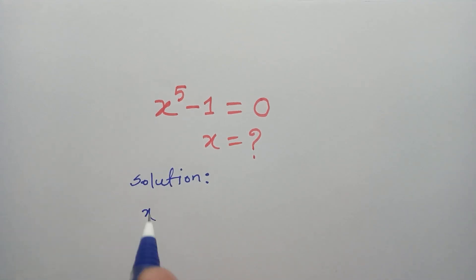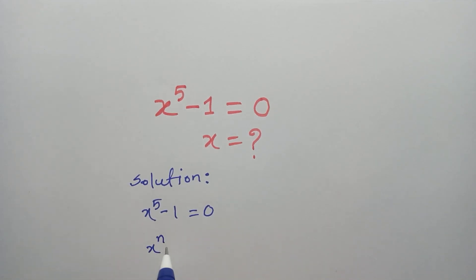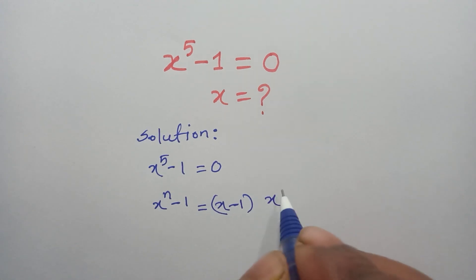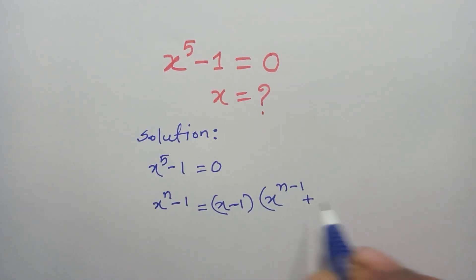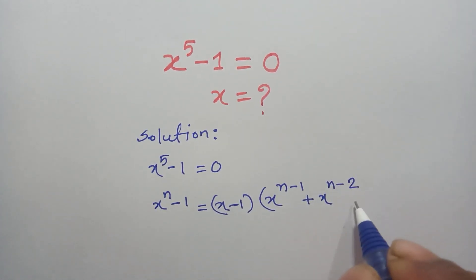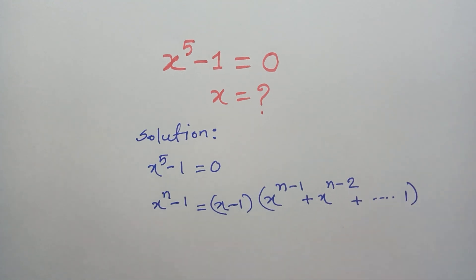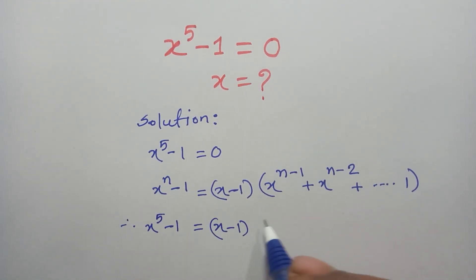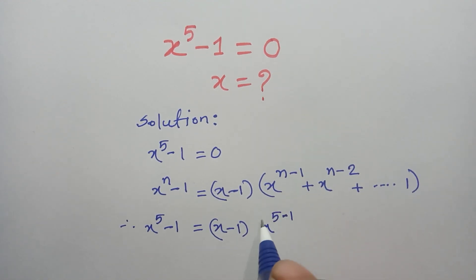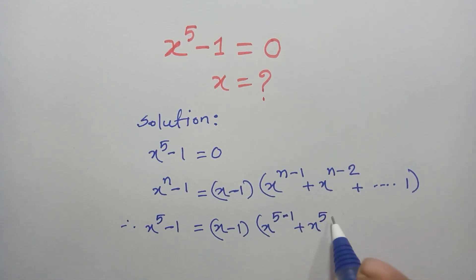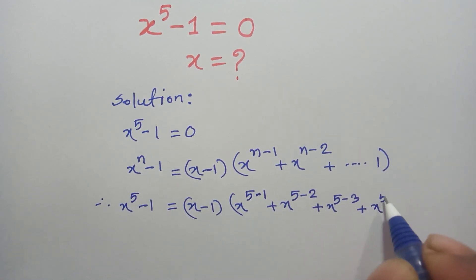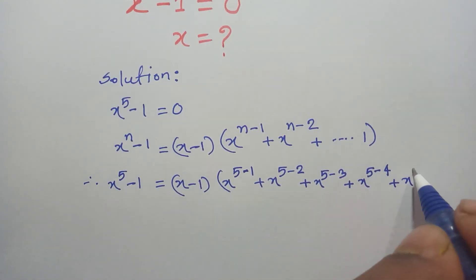Solution: we have given x to the power 5 minus 1 is equal to 0. We know that x to the power n minus 1 is equal to x minus 1 times x to the power n minus 1 plus x to the power n minus 2 plus dot dot dot plus 1. Therefore, x to the power 5 minus 1 is equal to x minus 1 times x to the power 5 minus 1, x to the power 5 minus 2 plus x to the power 5 minus 3 plus x to the power 5 minus 4 plus x to the power 5 minus 5.